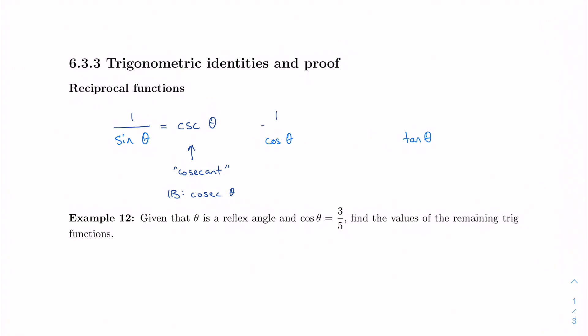1 over cosine is secant. Yes, this is secant. And 1 over tangent is cotangent. So you have cosecant, secant, and cotangent.